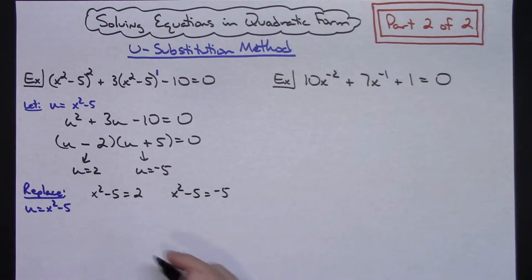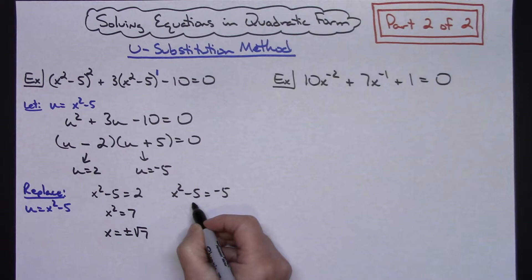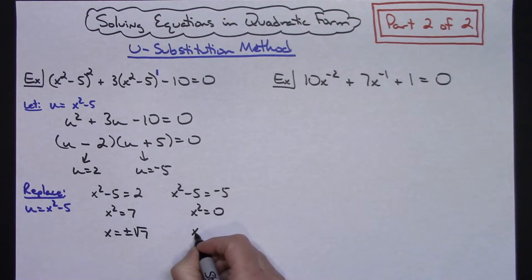From here it's an equation we can hopefully easily solve. I'm going to add 5 to both sides. x squared equals 7, and I need to take square root of both sides to solve for x. So x equals plus or minus the square root of 7. On this one, I add 5 to both sides. That gives me x squared equals 0. If I take square root of both sides, I just get x equals 0.